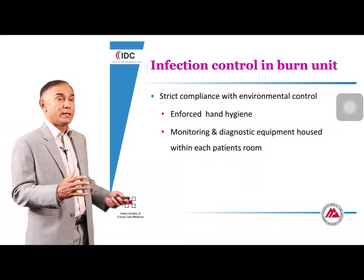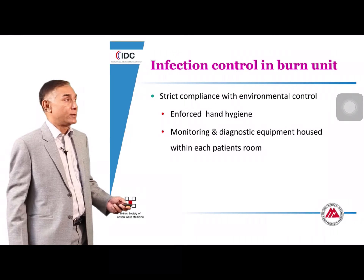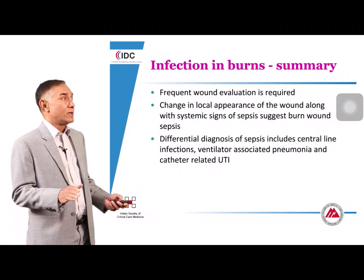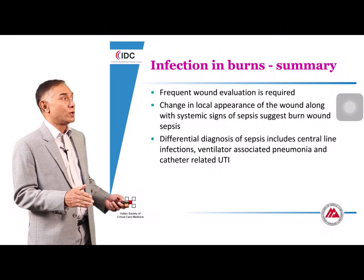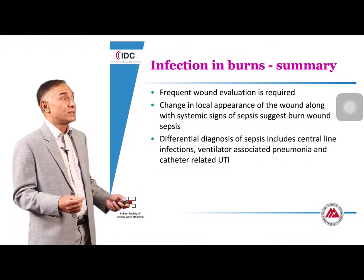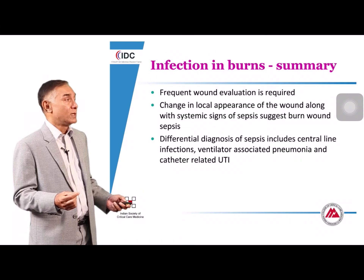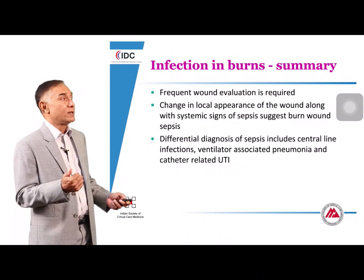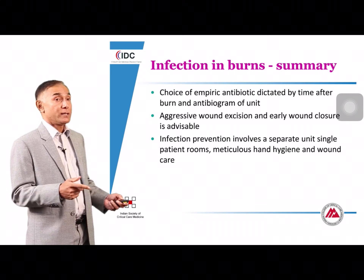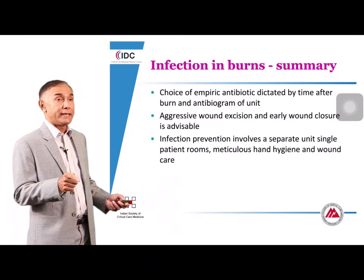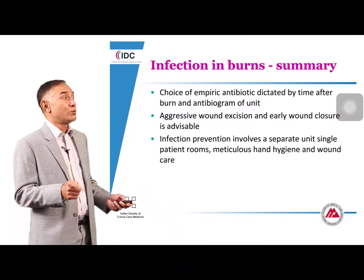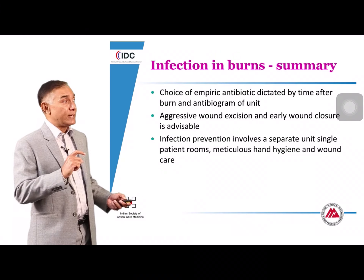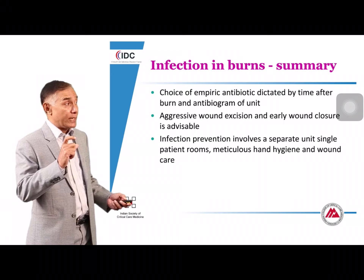In summary for burns: examine the wound carefully; a change in local appearance combined with systemic signs of sepsis suggests burn wound infection. Differential diagnosis includes typical ICU infections — central line, VAP, and UTI. Empiric antibiotics should be based on the burn unit antibiogram. Aggressive wound excision and early wound closure are crucial, and infection prevention is an entire discipline in itself.